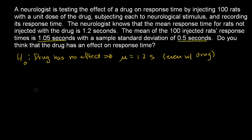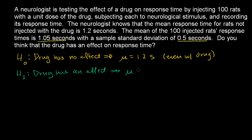What you want is an alternative hypothesis. The alternative hypothesis is that the drug actually does do something — that the mean does not equal 1.2 seconds when the drug is given.